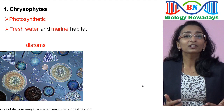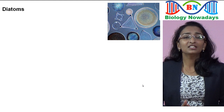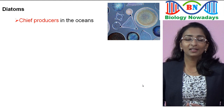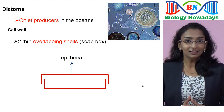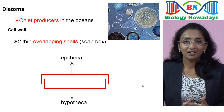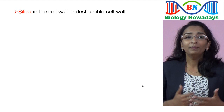About diatoms — they are the most important and chief producers of the oceans. Many living organisms depend on them for food. Diatom cell walls form two thin overlapping shells which fit together like a soapbox. The top half of the cell wall is called the epitheca — 'epi' means top — and the bottom half is called the hypotheca — 'hypo' means under. There are deposits of silica in the cell wall, and because of this the cell walls are indestructible; they cannot be destroyed.